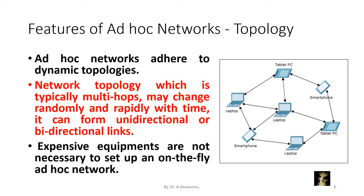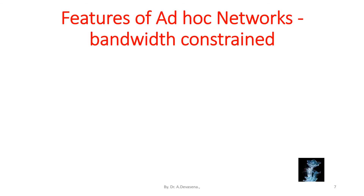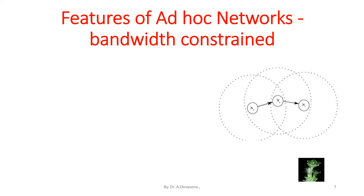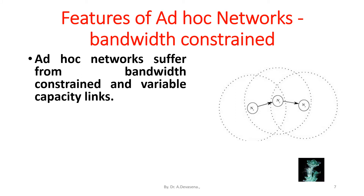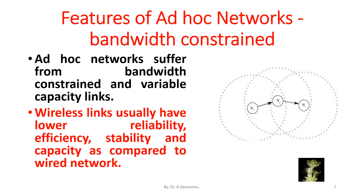Expensive equipment is not necessary to set up an on-the-fly ad hoc network. The next feature is bandwidth constraint. Ad hoc networks suffer from bandwidth-constrained and variable capacity wireless links. Wireless links usually have lower reliability, efficiency, stability and capacity as compared to wired networks.